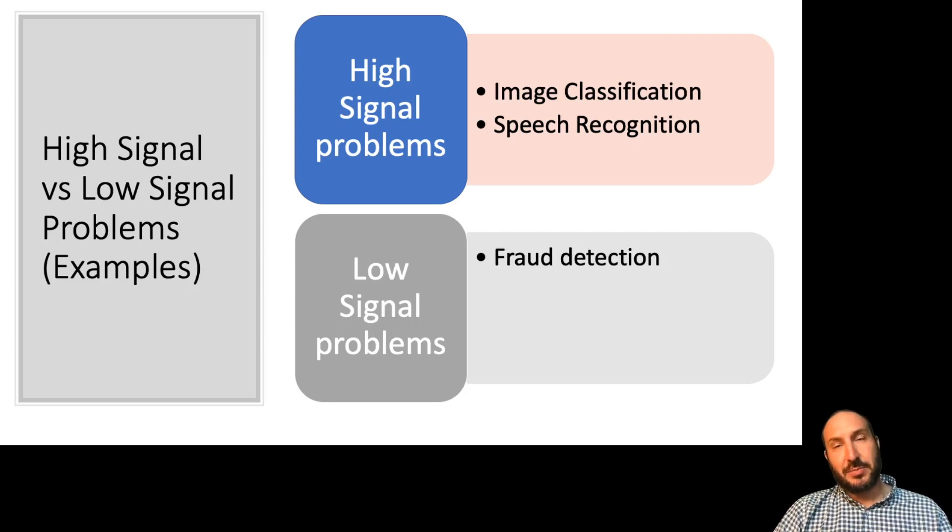Examples of low signal problems are things like fraud detection. So in most fraud detection problems, because fraud is so rare and generally difficult to detect, you'll often have the case where even something with a 10% probability of fraud is considered a very, very high probability of fraud for a model to output. And that's why, for example, you'll get calls from your bank asking you to verify transactions. And you'll notice that a lot of times it's totally legitimate transactions that they're calling you about. And that's the nature of this problem. It's just a low signal problem. It's unreasonable to say that you could say with certainty that something is fraud.